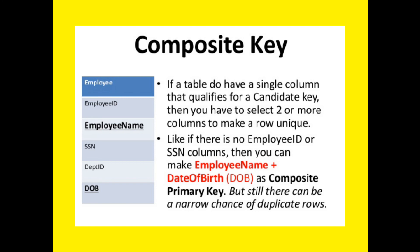Let's understand what is a composite key. If a table does not have a single column that qualifies for a candidate key, then we have to select two or more columns to make a row unique. For example, if there is no employee ID or SSN column, then we can make employee name plus date of birth as a composite primary key, but there can still be a narrow chance of duplicate rows.